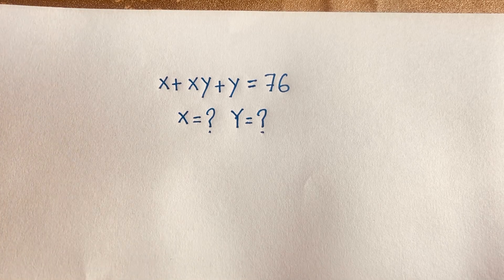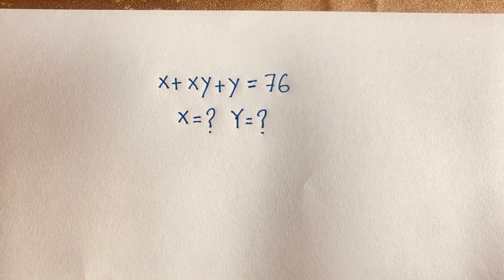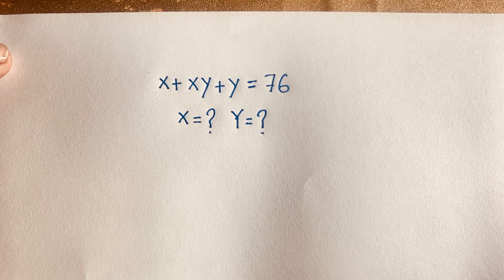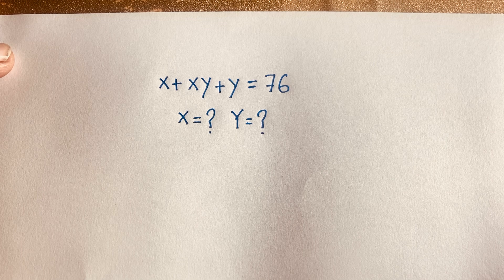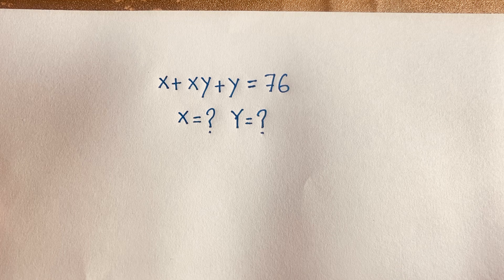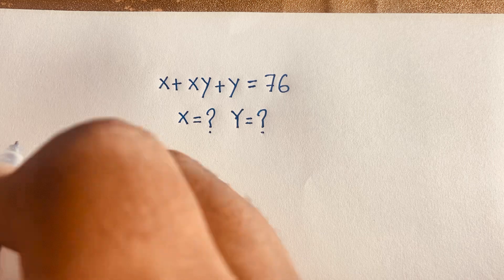Hello everyone. In this video we have solved this interesting math olympiad question: x plus xy plus y is equal to 76. What are x and y? Here x and y are positive integers. So how to solve this interesting math olympiad question? Let's start.